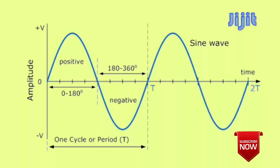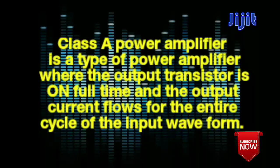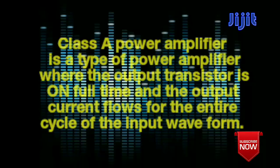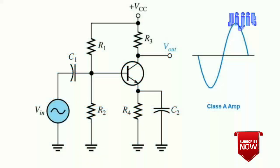In a Class A amplifier, the output covers the full 360-degree signal. The current flows continuously through the output load for the full 360 degrees of the input signal cycle.